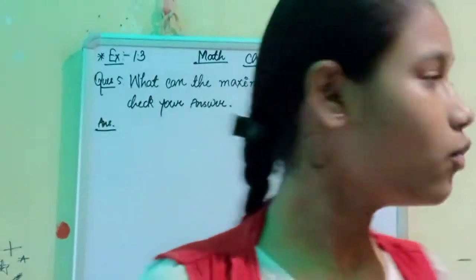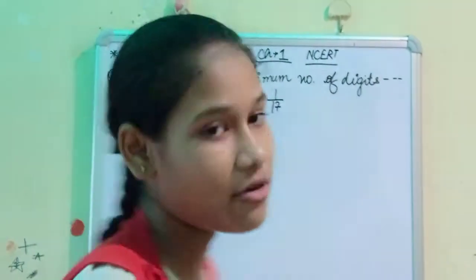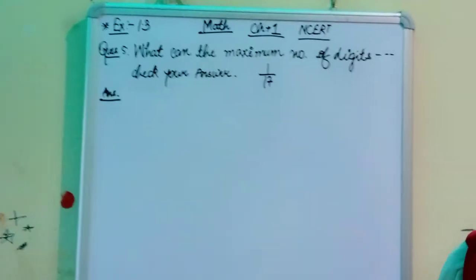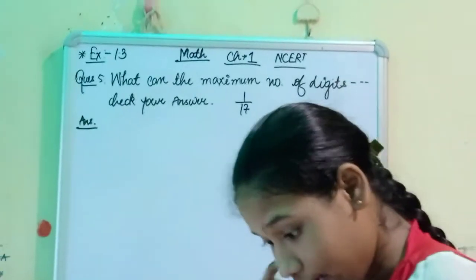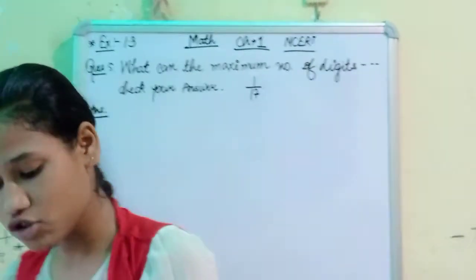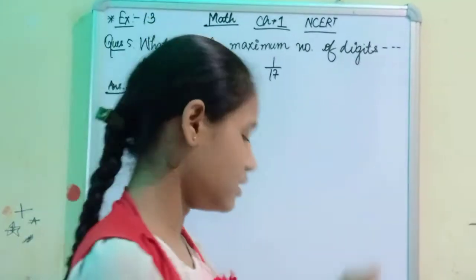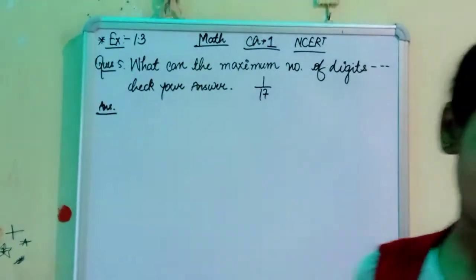So what we have to do? Let's see what the question says. The question asks: what can the maximum number of digits be in the repeating block of digits in the decimal expansion of 1 by 17? Perform the division to check your answer.